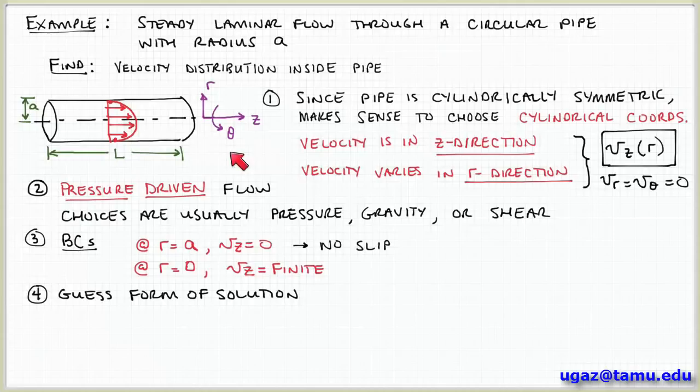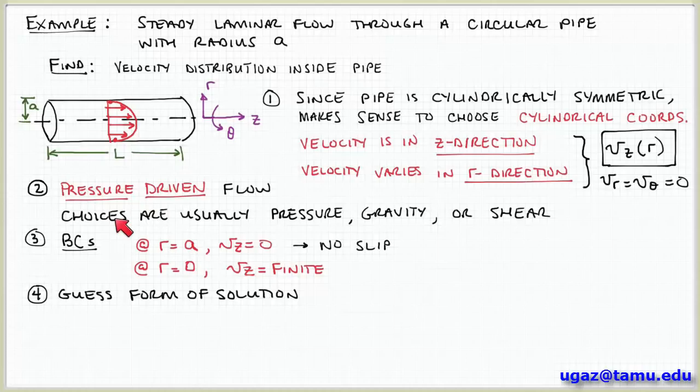We did steps one through four in the last screencast. Step one was to choose a coordinate system — we chose cylindrical coordinates. We noted that we expect the velocity to be in the z-direction along the axis of the pipe, and that it's going to vary in the r-direction from the walls to the centerline. We identified boundary conditions at the walls at r equals a: the velocity is zero due to the no-slip condition. Along the centerline we said that the velocity is finite.